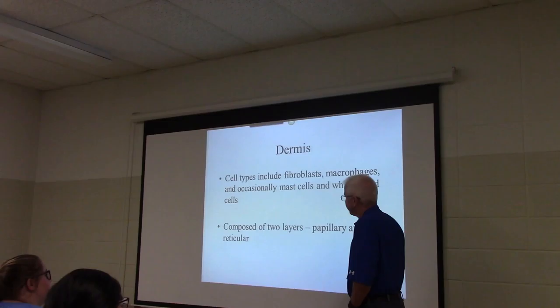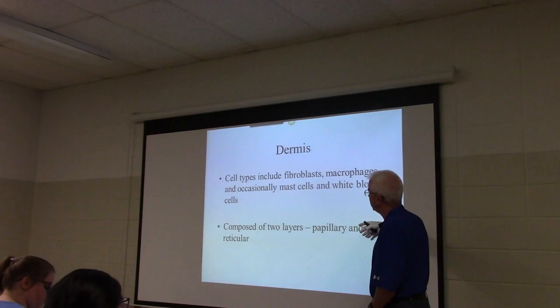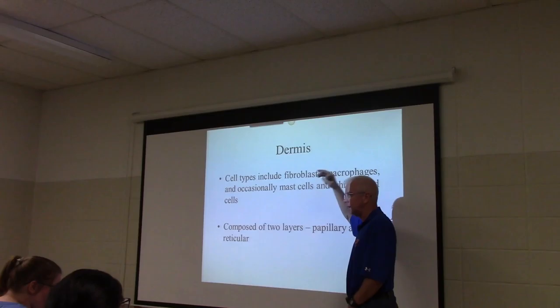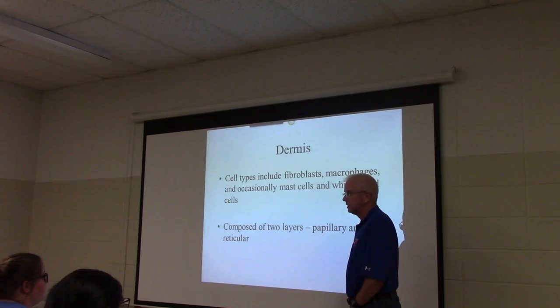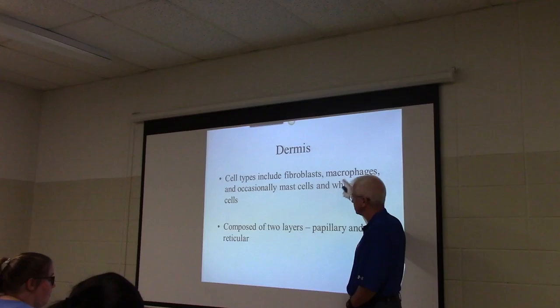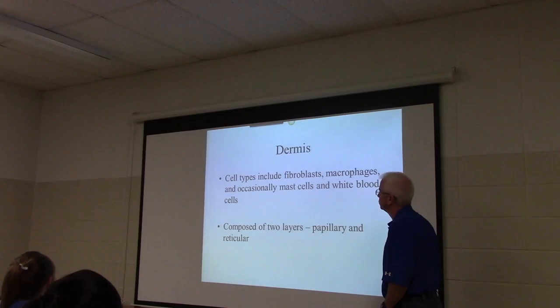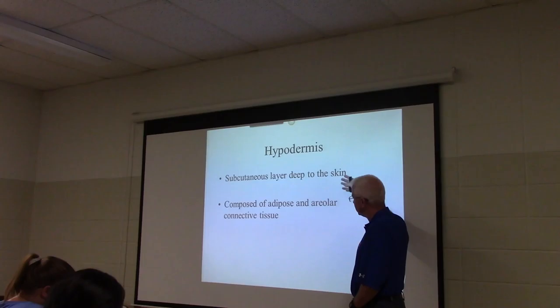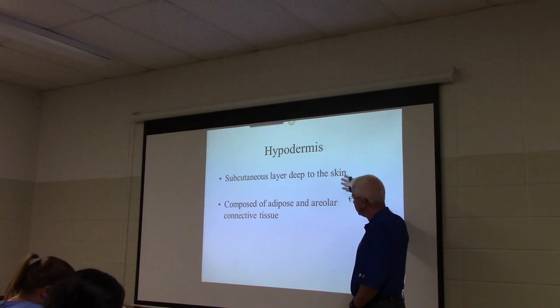The dermis includes two layers: the papillary and reticular. It's made of fibroblasts — dense, irregular connective tissue proper — along with macrophages, mast cells, and white cells. The hypodermis underneath the dermis is composed of adipose tissue, and below that is areolar connective tissue.